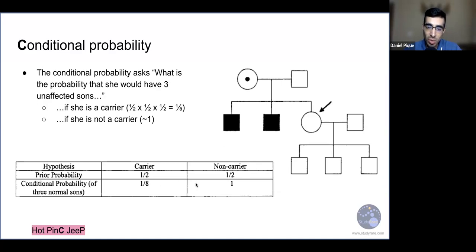Then we ask the sort of alternative question, which is, what's the probability that she has three unaffected sons if she's not a carrier? So if she's not a carrier, there is a 100% probability that she's going to have unaffected sons because she's not going to carry this disease. She cannot have an affected son. That means she's going to have all unaffected sons. And so the conditional probability for this condition is essentially one. So a 100% chance that we would see this situation were she not a carrier, the situation of three unaffected sons were she not a carrier.